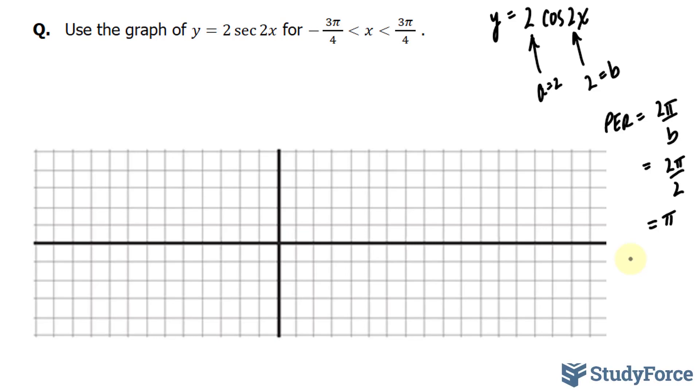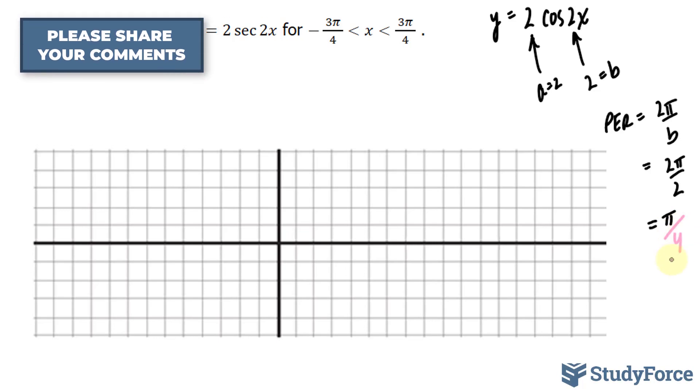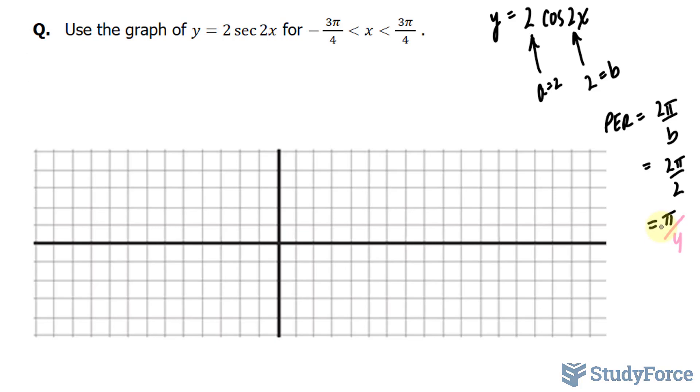That being said, the next thing that I'll do is find out five critical points of this wave. And I can do that by dividing this by 4. If I divide this by 4, this means that we'll have a point at π over 4. We'll have another point at π over 4 plus π over 4, which is 2π over 4.